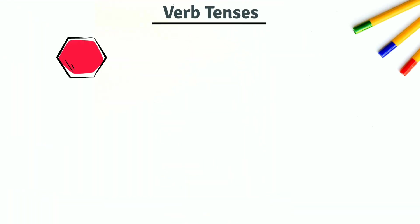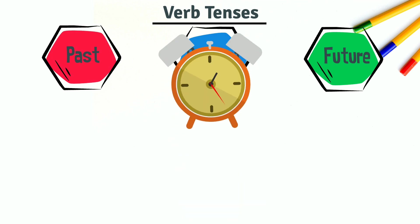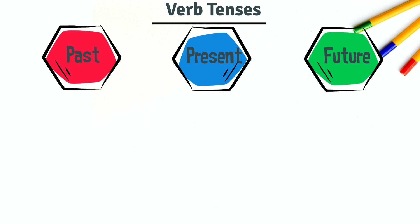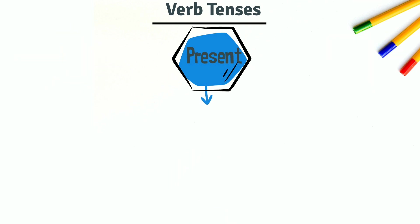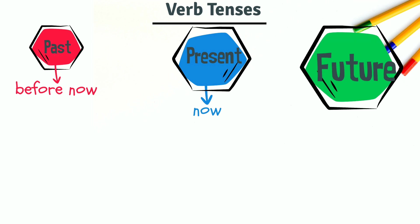Verbs come in three tenses: past, present, and future. The verb tense tells us when an action takes place. The present tense tells us about action that is happening now. The past tense tells us about action that has already happened before now. And the future tense tells us about action that is going to happen later than now.